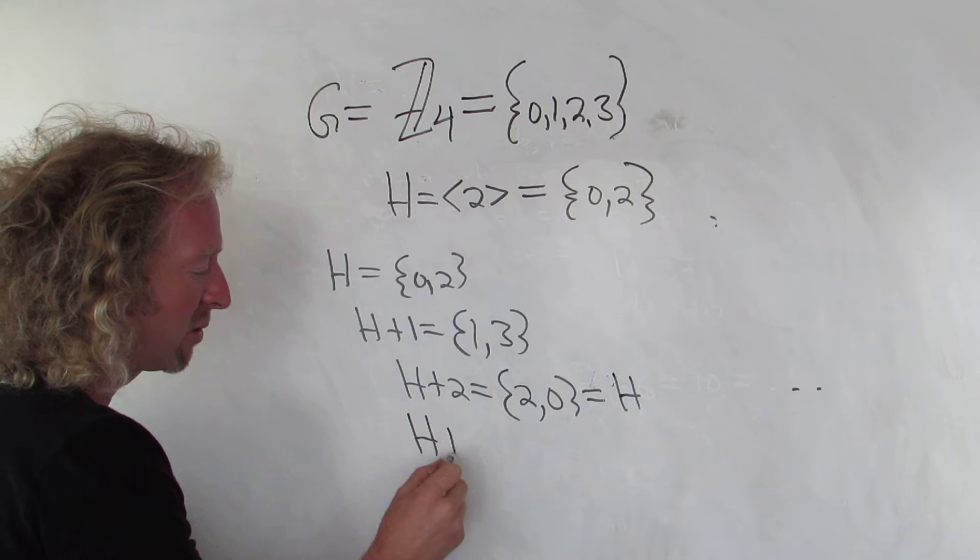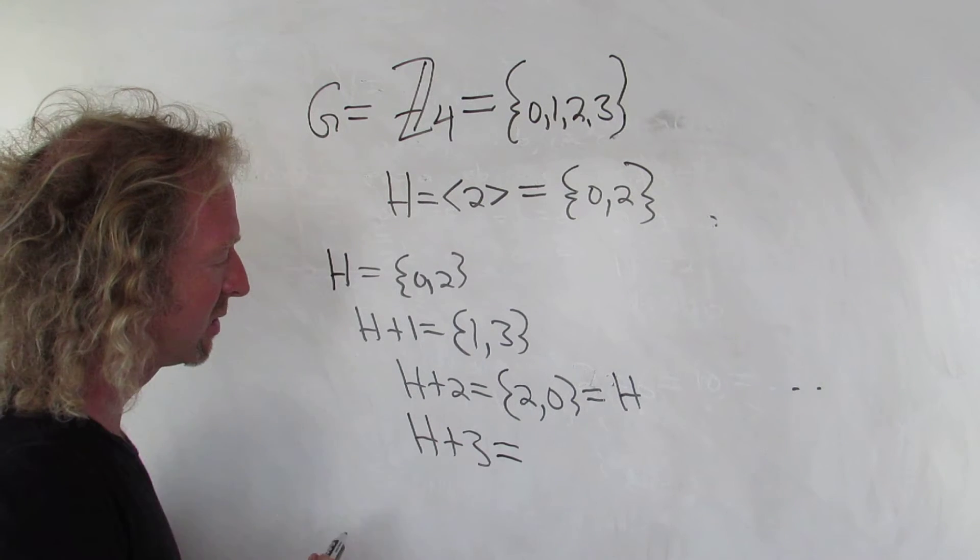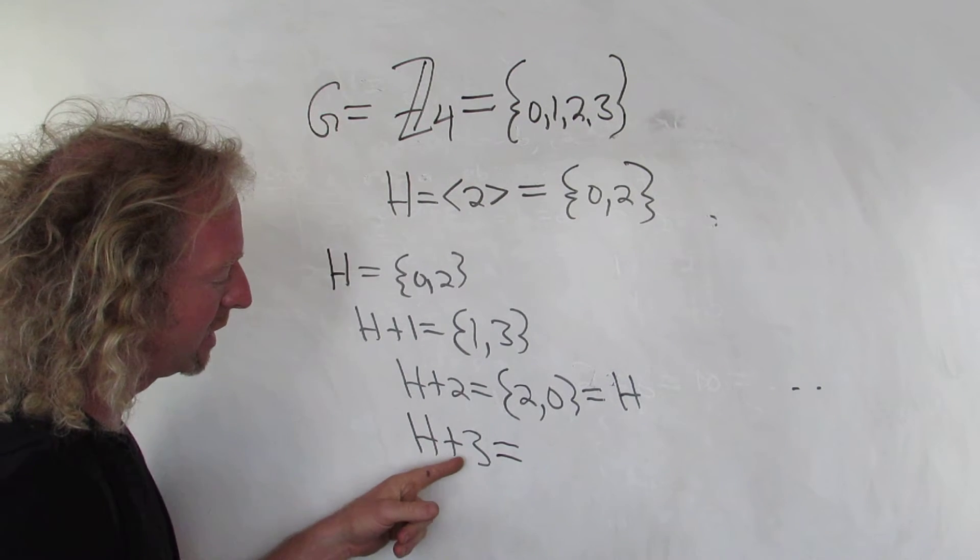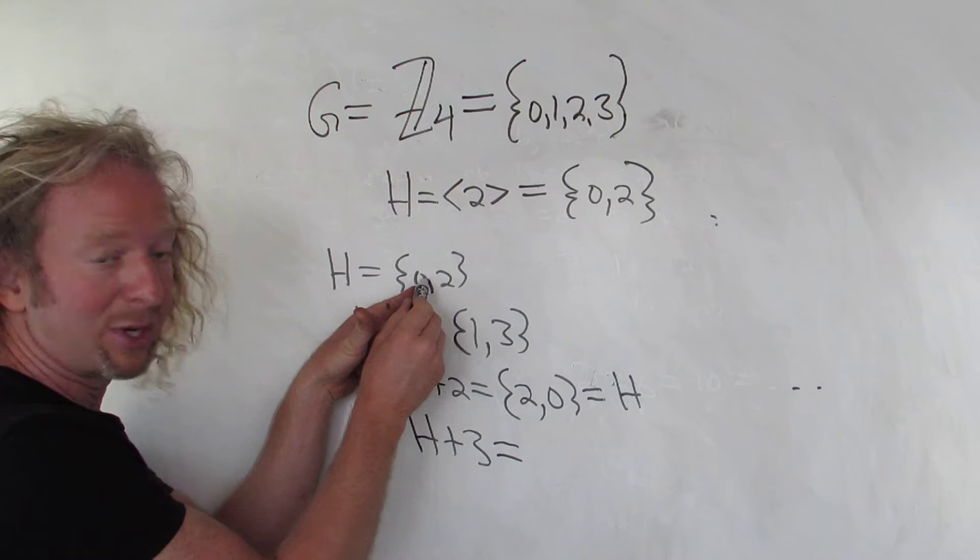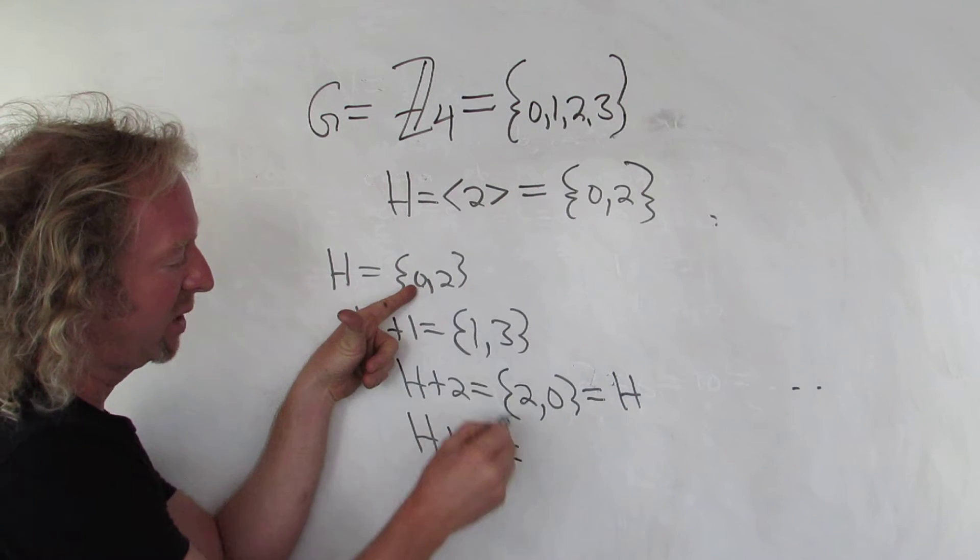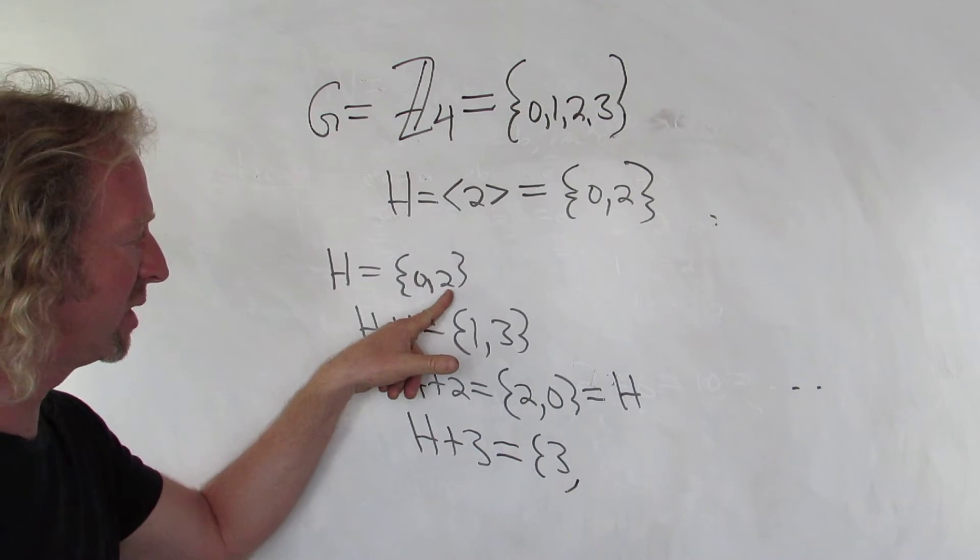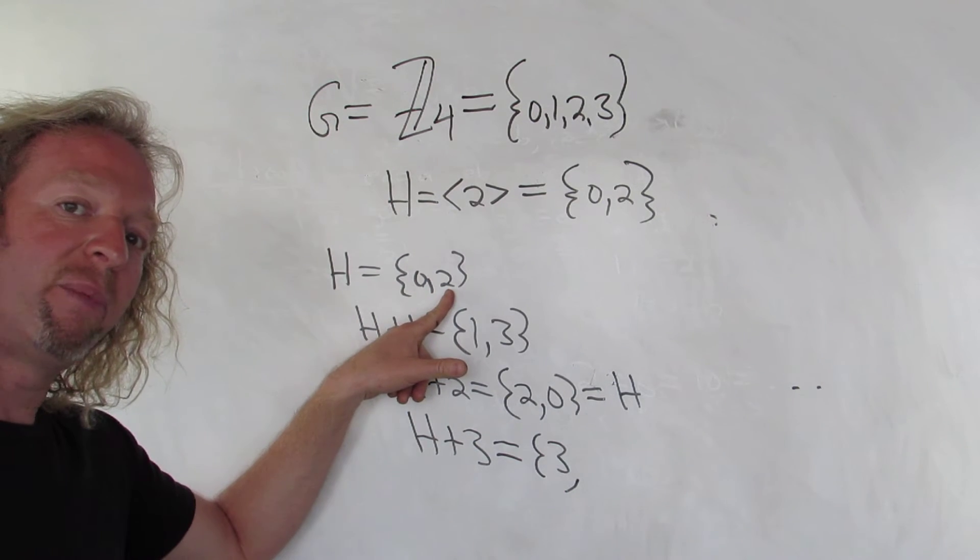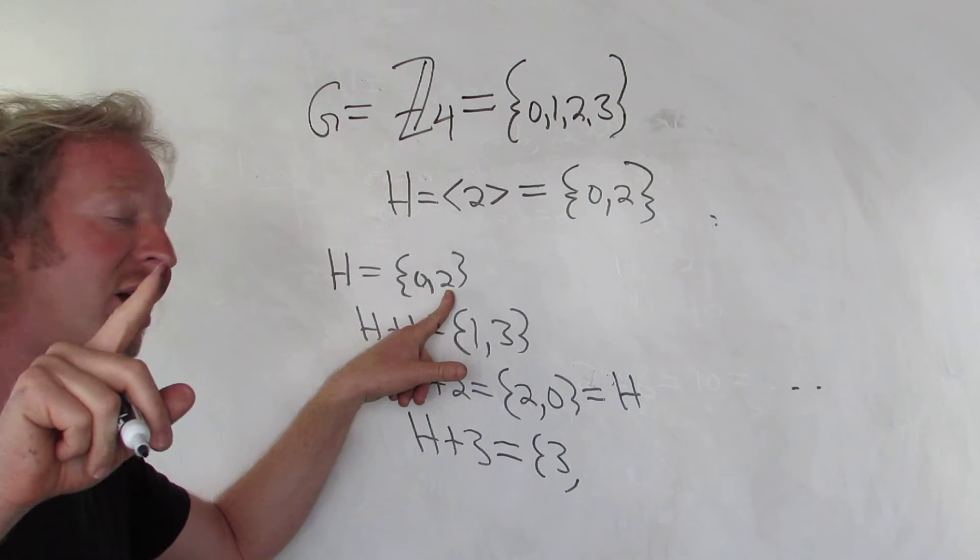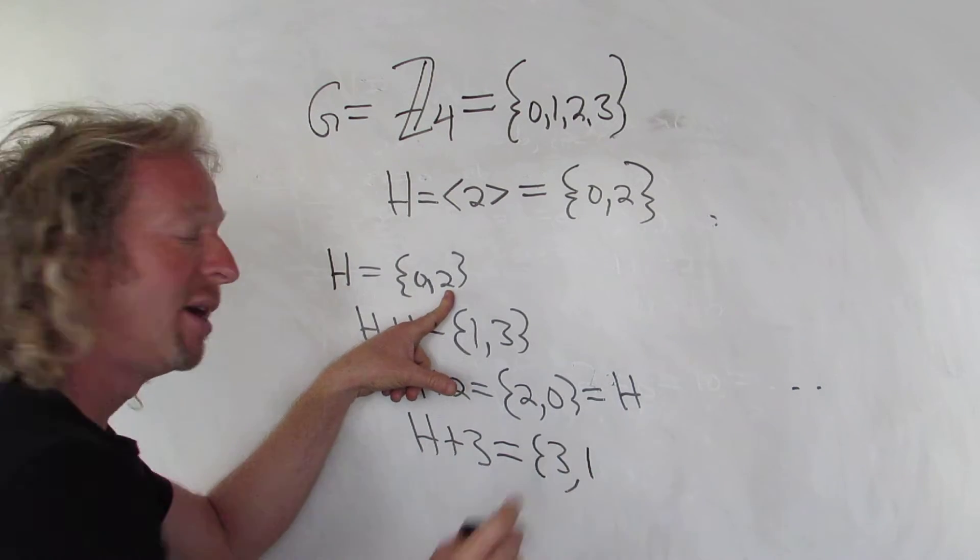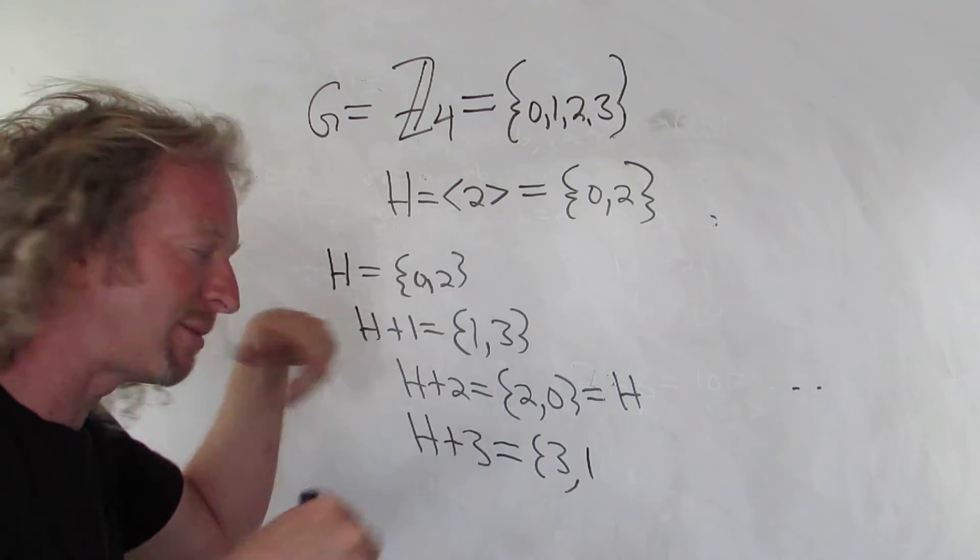If you look at H plus 3, what happens here is that you get 0 plus 3, so you get 3. And then 2 plus 3 is 5, but 5 is equal to 1 modulo 4. So this is 1, because 4 goes into 5 one time, the remainder is 1.